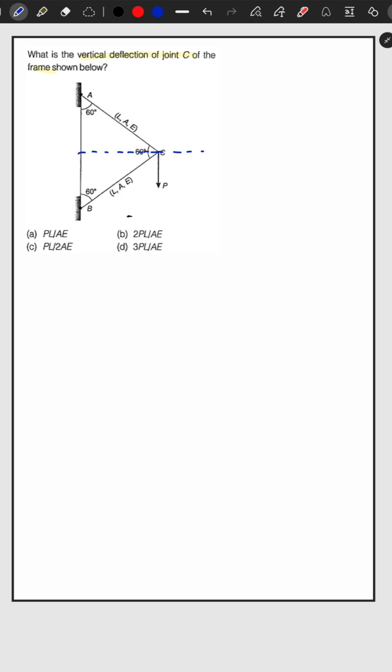So doing the angle bisector, the angle is 60 degrees. So this angle will be 30 degrees and at joint C the force is downward. So force in member AC will be tensile and force in member BC will be compressive.